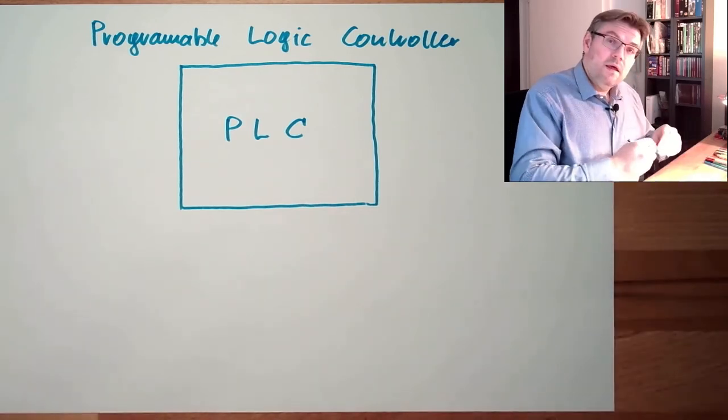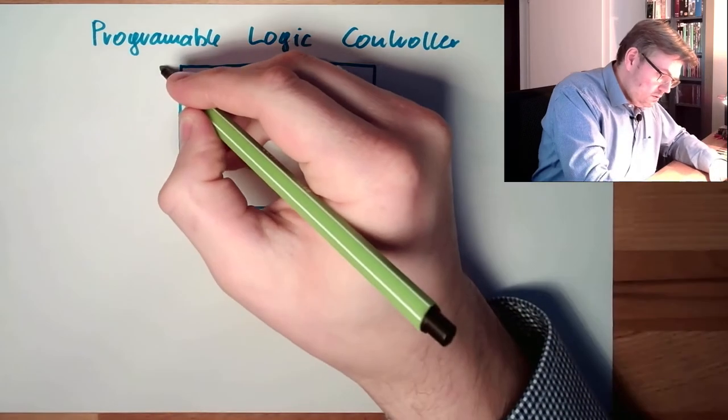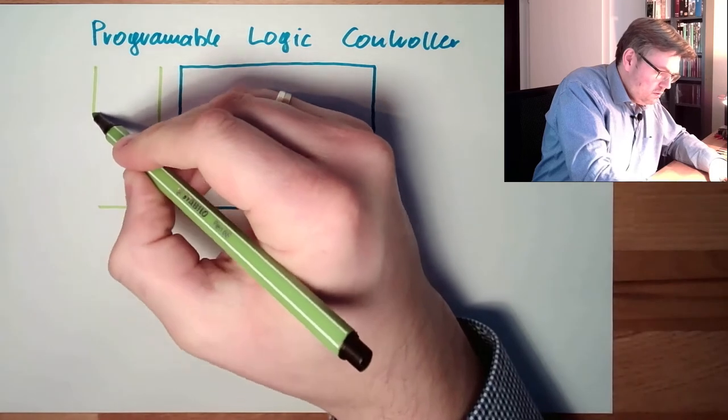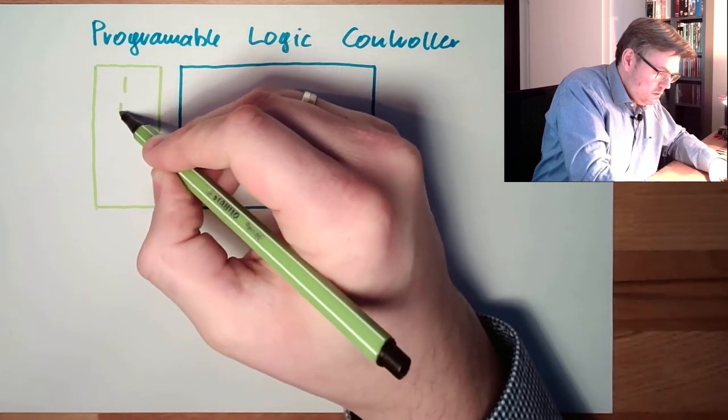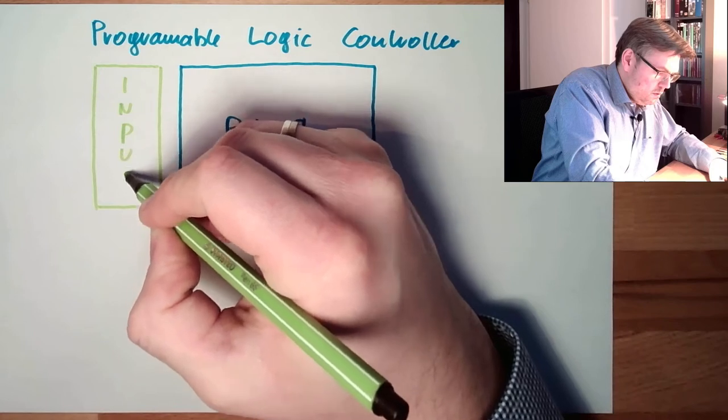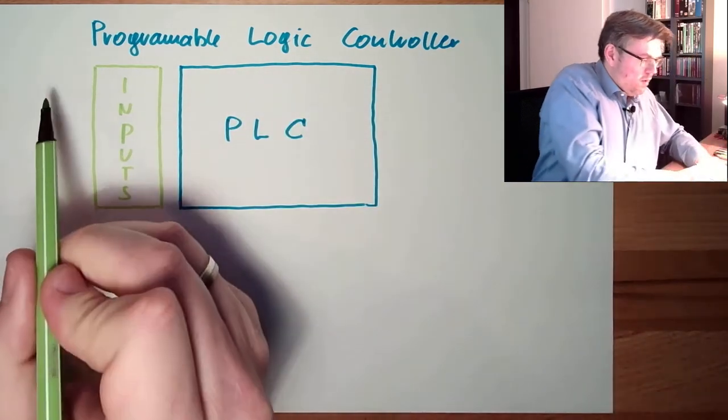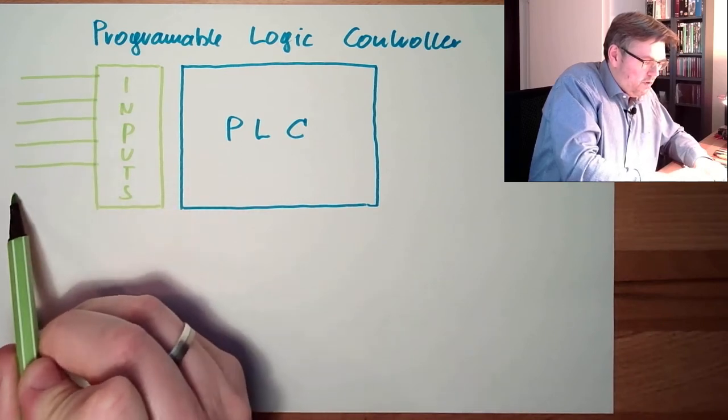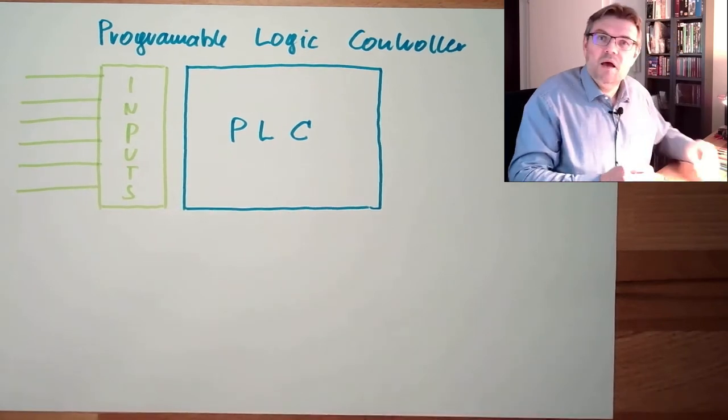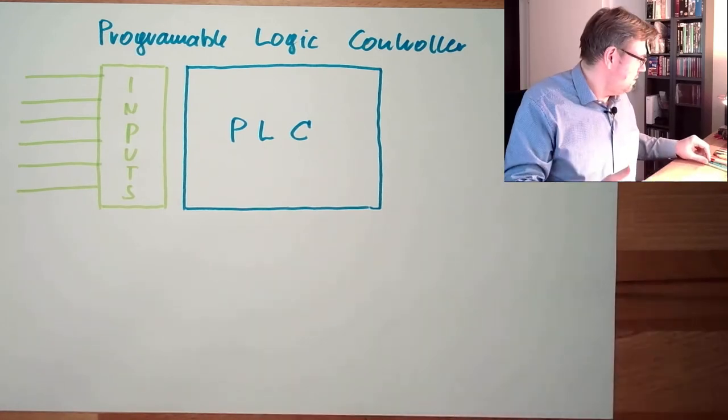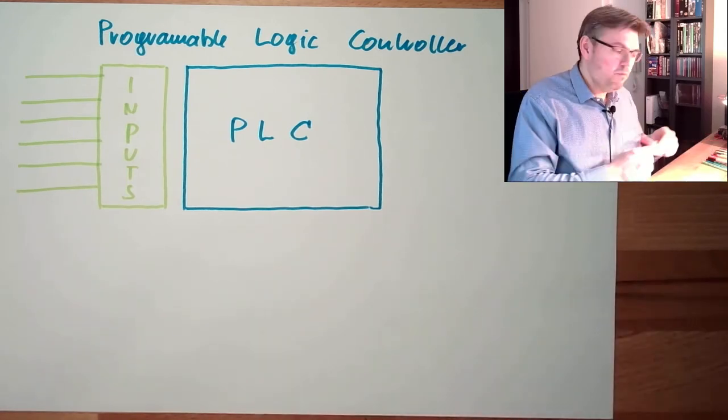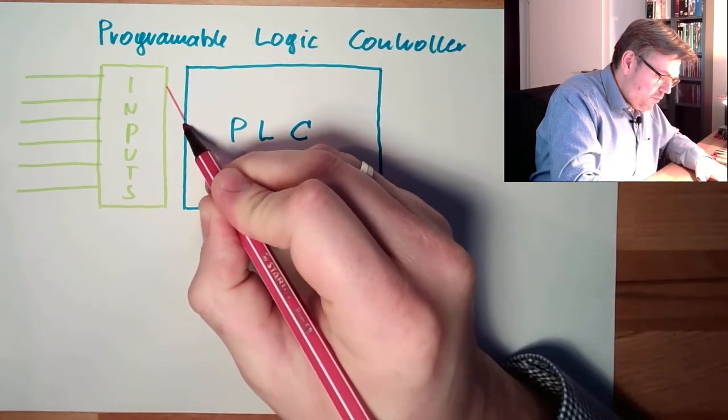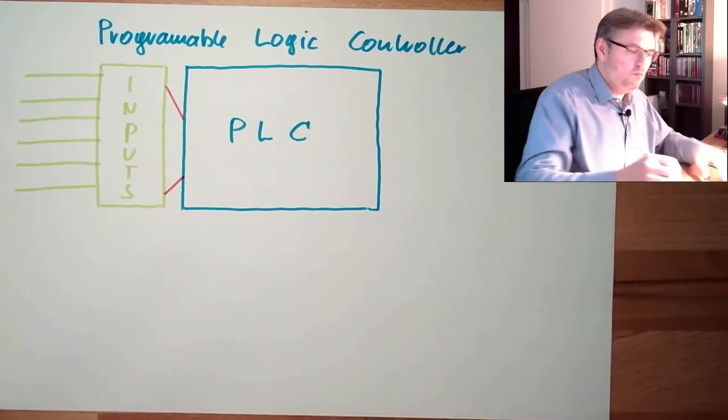PLC, it has inputs. There is an interface with inputs. There can be several inputs, digital, analog, whatever. Different PLC types do have different input types. Some are even configurable. We are going to talk about this. This input can be read by the PLC. They are transferred to the PLC.